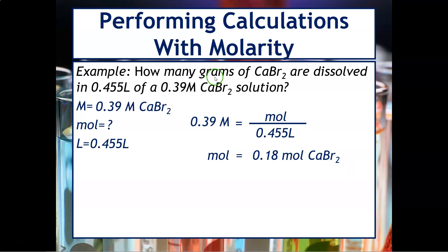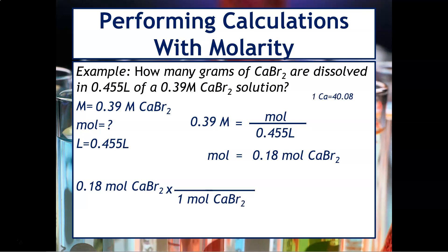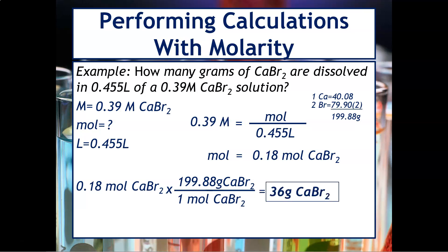But this problem is asking for grams, not moles. To go from moles to grams we use the molar mass. Set up a dimensional analysis calculation: take 0.18 moles of calcium bromide and multiply by the molar mass of calcium bromide. Calculate the molar mass off to the side — as shown in the upper right corner — then plug that into the numerator. Multiplying 0.18 times 199.88 grams per mole gives 36 grams of calcium bromide. Many students stop at moles, but since the question asks for grams, you must take that extra step.